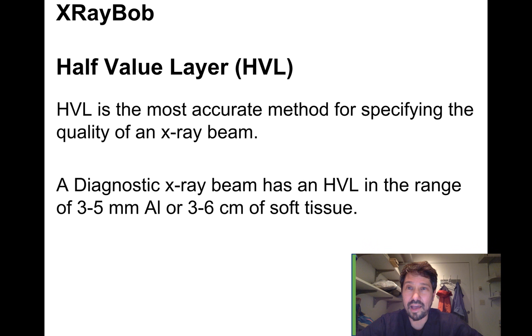The HVL is the most accurate method for specifying the quality of your x-ray beam. Typical diagnostic x-ray beams have HVLs in the range of three to five millimeters of aluminum or three to six centimeters of soft tissue. So four millimeters of aluminum thrown in front of the x-ray tube would cut the beam intensity in half.